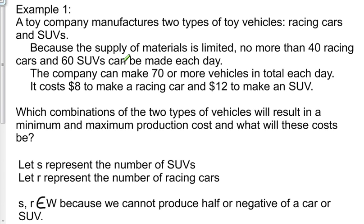A toy company manufactures two types of toy vehicles, racing cars and SUVs. Because the supply of materials is limited, no more than 40 racing cars and 60 SUVs can be made each day. The company can make 70 or more vehicles in total each day.